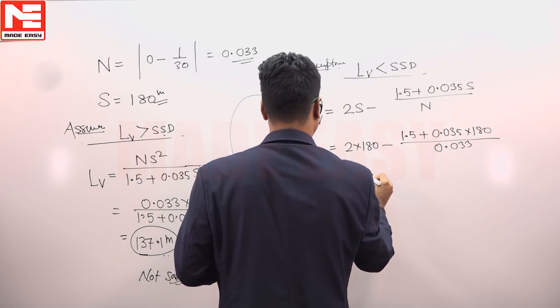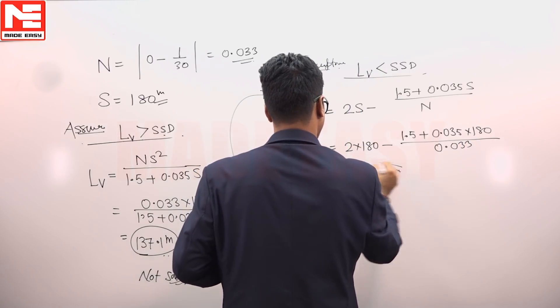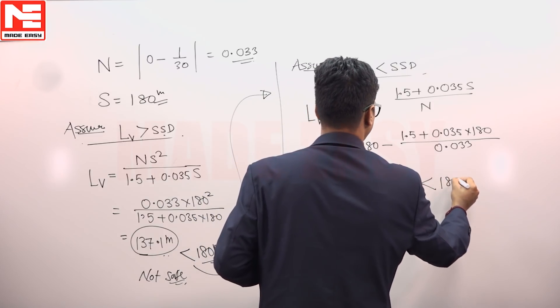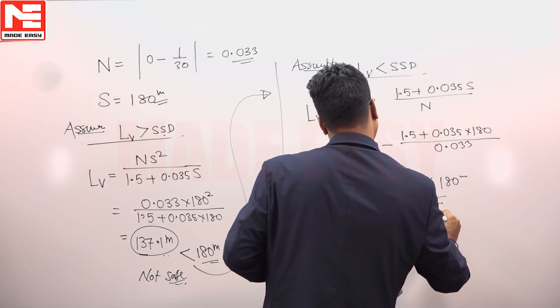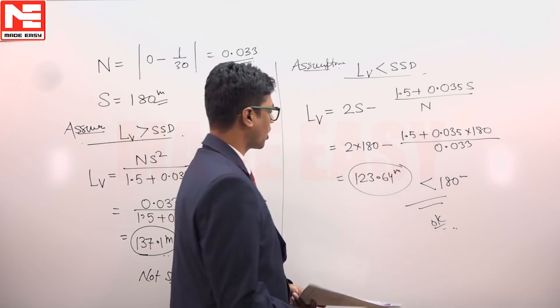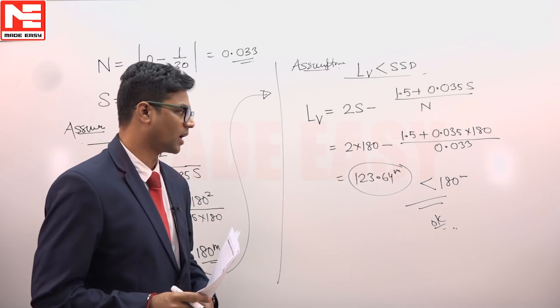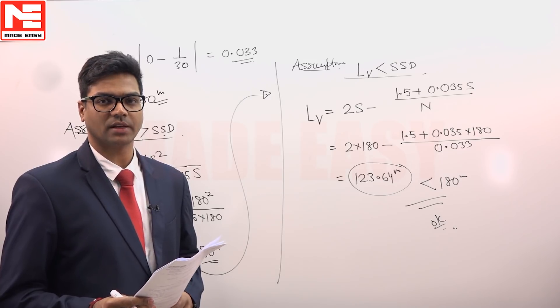So this is 123.64 meter and this is coming less than 180 meter. So this is okay. So correct answer for this question is 123.64 as the length of valley curve.